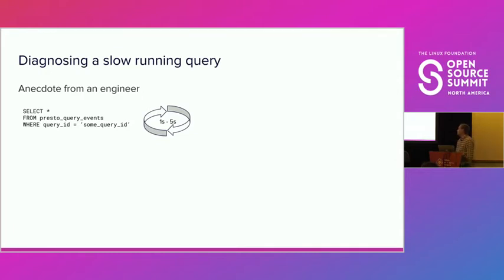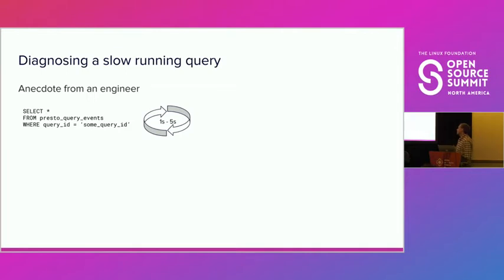Very often, if I wanted to debug some problem or better understand slowdowns in query processing, I had to pull up runtime information about specific queries. For example, a user would reach out saying their query is running slow or failing, and ask us to figure out what's going on. We had a dataset called Presto Query Events containing runtime information about all queries running in the cluster. I'd query it by query ID to extract runtime statistics, query plan, and so on. These queries were usually very fast — maybe a second or a couple of seconds — so we could iterate quickly.